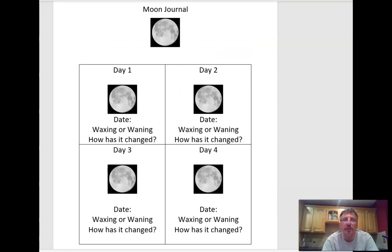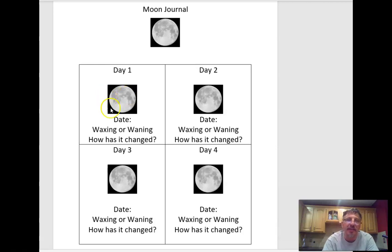You're going to have a month-long journal assignment — a moon journal inside your science journal. For the next seven or eight pages, write 'Moon Journal' at the top, then Day 1, Day 2, Day 3, etc. Each day, go outside at night, draw exactly what you see, record the date, and note whether it's waxing or waning — right side lit means waxing, left side lit means waning. Note how it changed from the previous day. If you miss a day, you can Google the moon phase for that date, but it's more fun to observe it yourself.